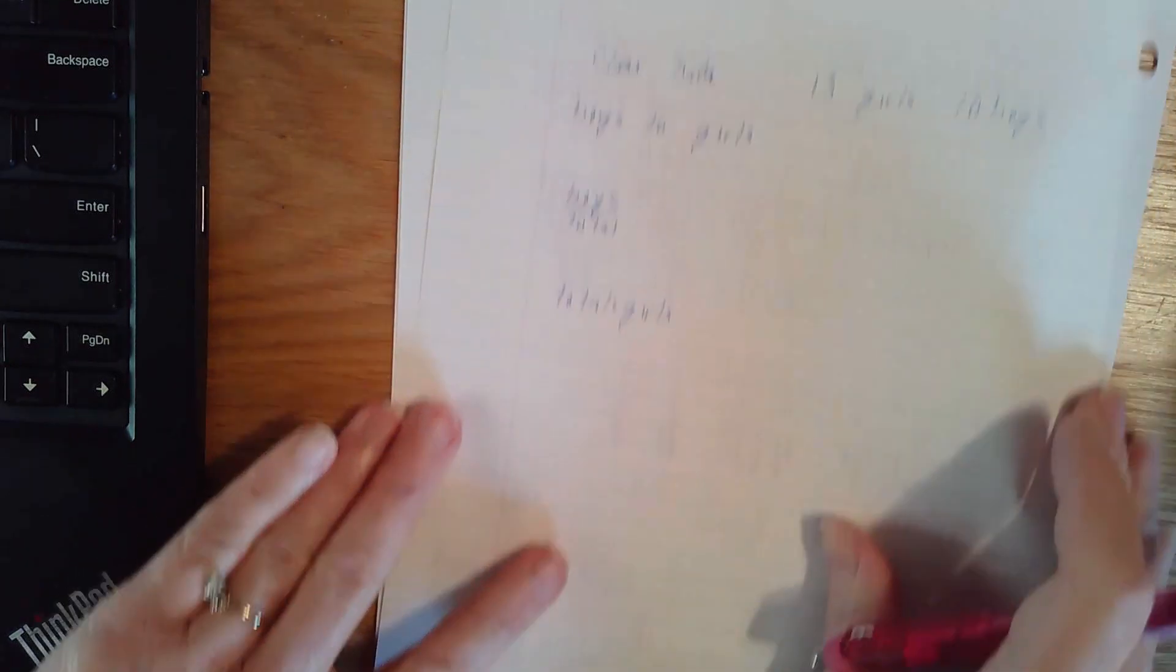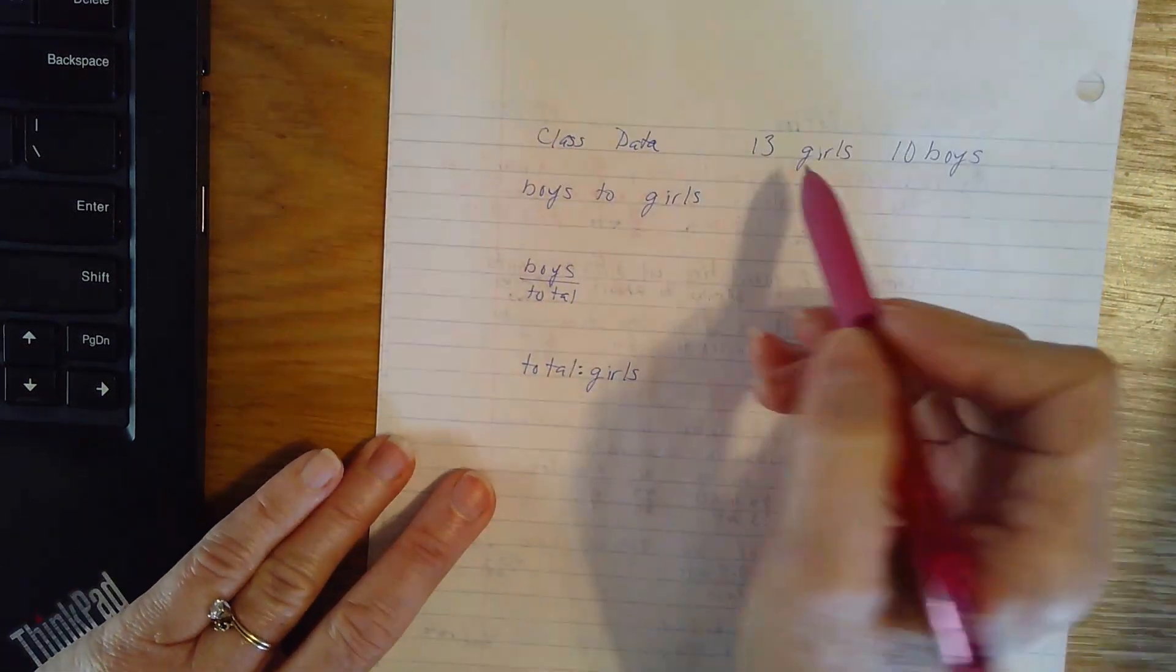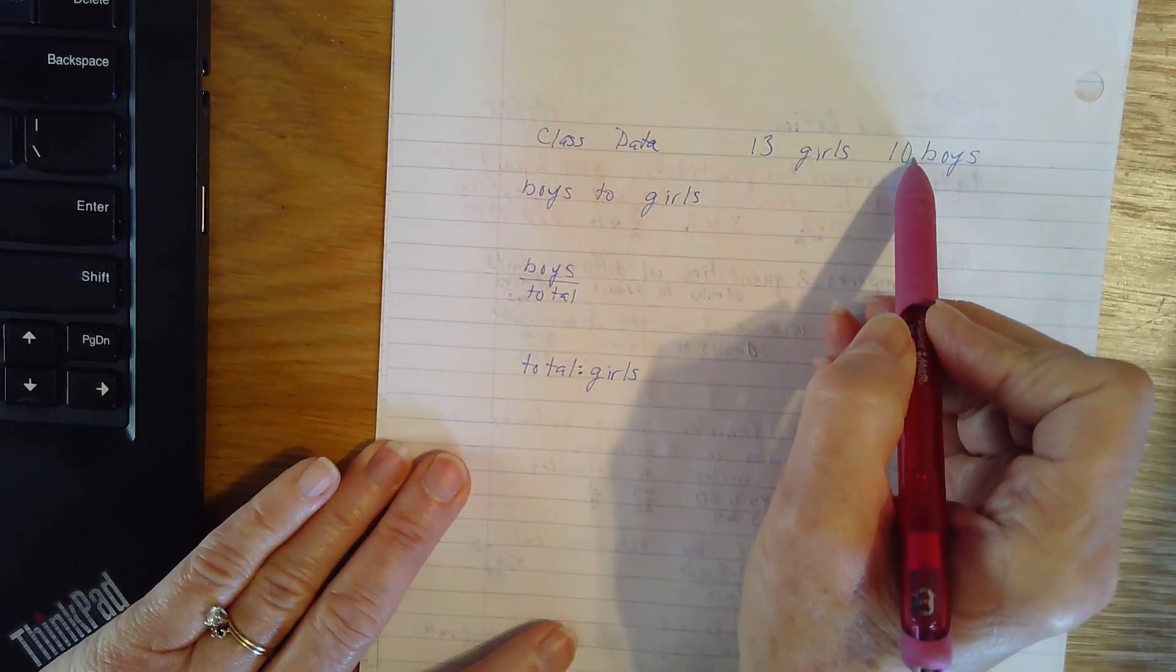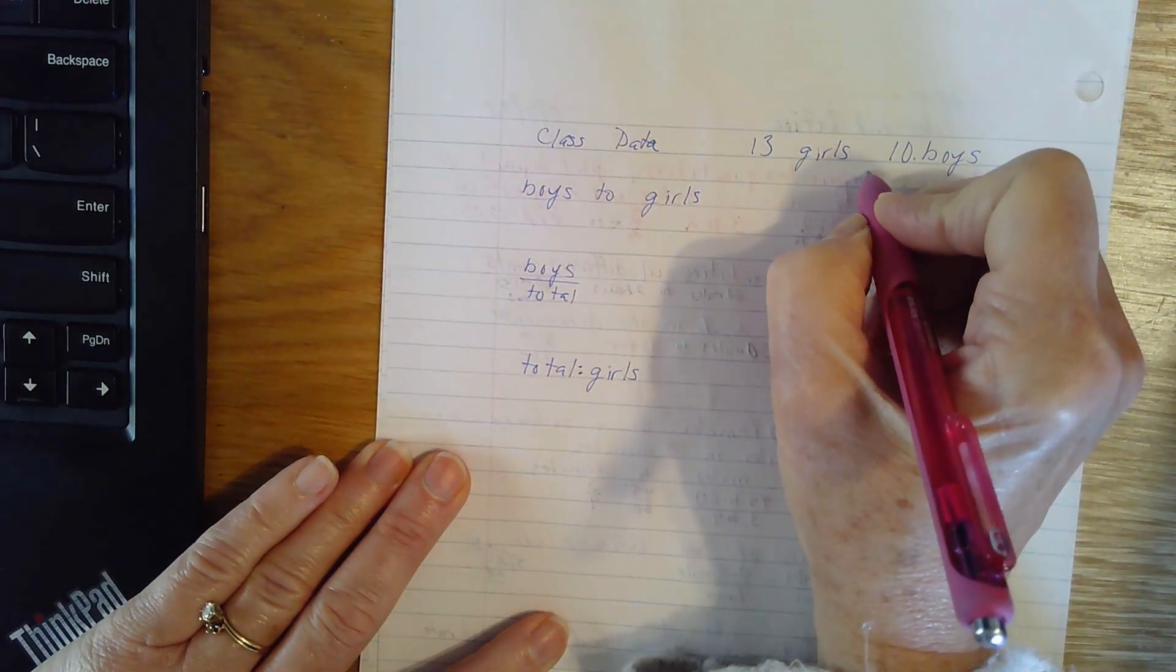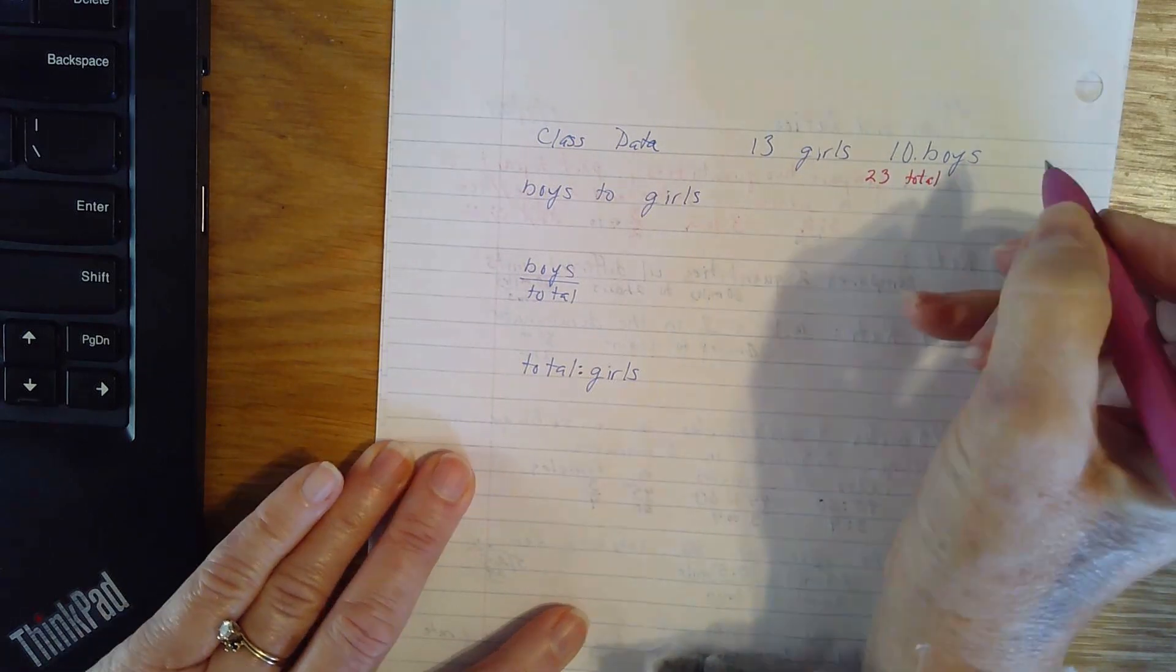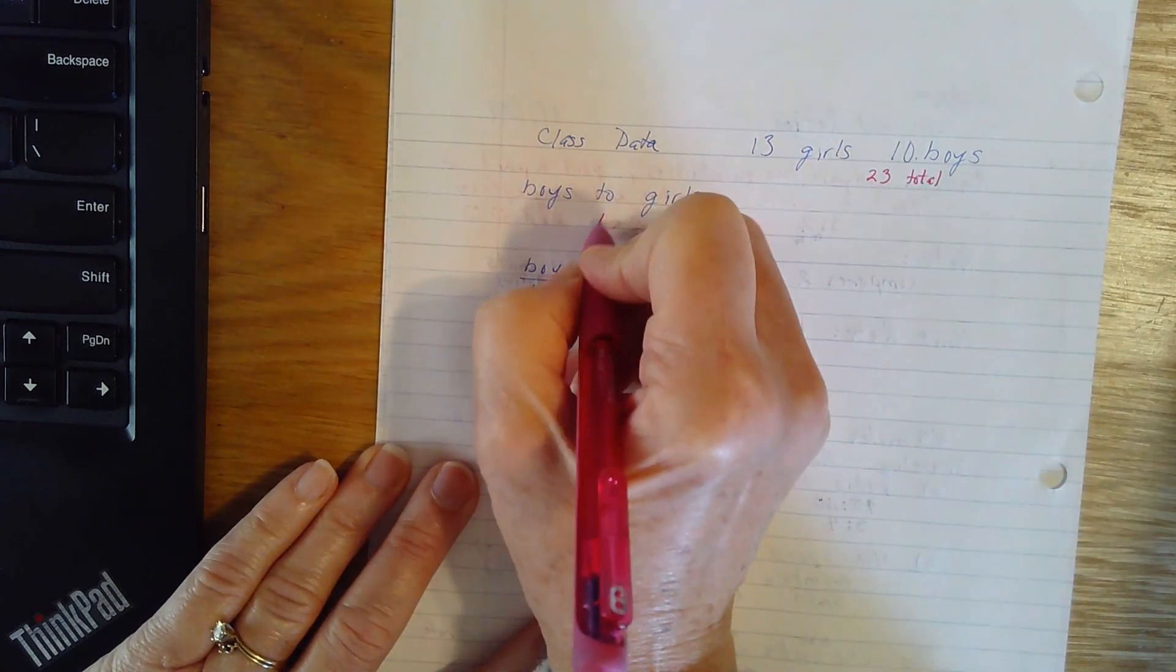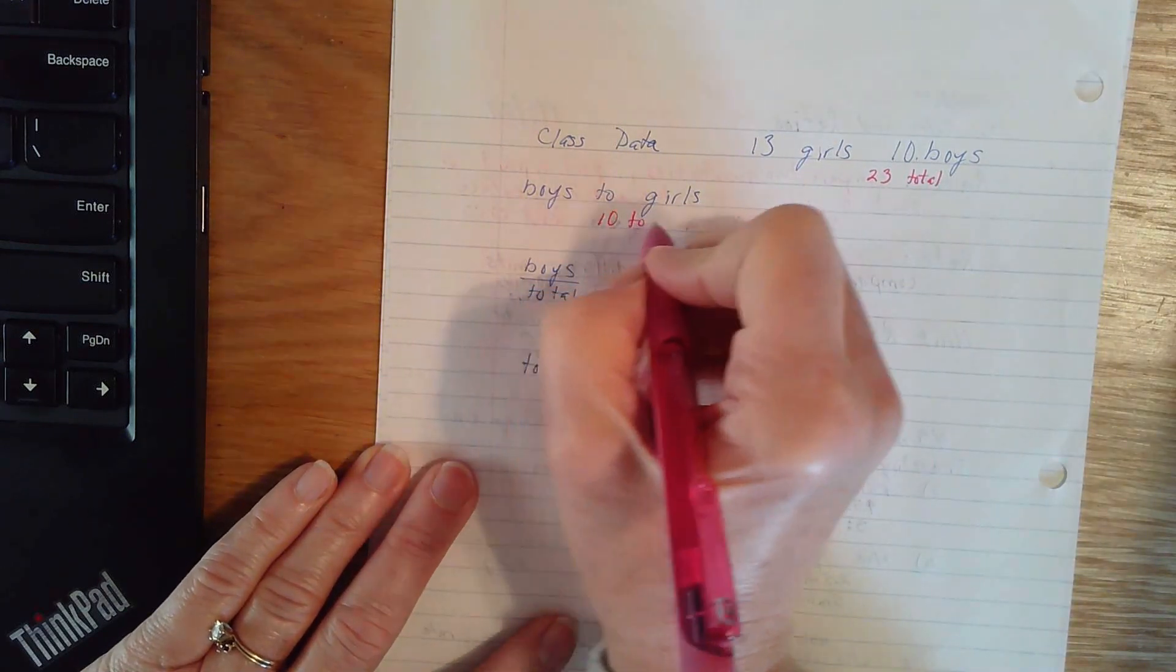So let's go ahead and take a look at some of our class data. We have got 13 girls and 10 boys. That would tell us that we have got 23 total students. And I want a ratio of boys to girls. That would be 10 to 13.